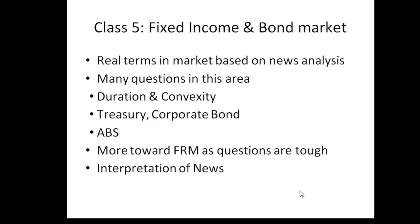Coming to another very important area: fixed income. The questions here are real market-based — for example, after a recession people purchased more treasuries, or the yields of Greece bonds increased because people think it's risky. They can show you a screen with credit default swap prices alongside bond yields. Questions cover sovereign bonds, corporate bonds, and US municipal bonds. You should also be aware of the three types of duration and the basic idea of convexity. Another subject seen more often in reading comprehension is asset-backed securities, specifically mortgage-backed securities, which were part of the 2007 crisis.